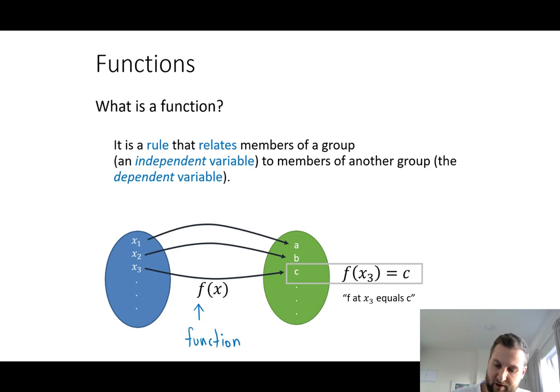So the function are these black arrows. And one thing we know about an arrow is that these arrows are one way. These arrows don't go in a backwards direction. These arrows only go in a forward direction. Now if I go back up to my definition here, we have a rule that relates members of a group. So the arrows here relate the members of the blue bubble to the green bubble.